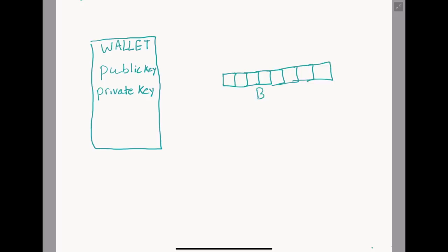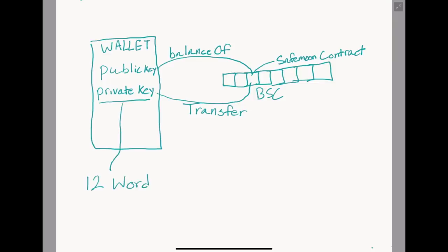All a wallet does is store your public-private key. It asks the blockchain what your balance is using your public key, and it calls the transfer function for you using your private key, so all you have to do is press a few buttons and the magic just happens. If you know your private key, whatever the 12-word seed phrase compiles into, you do not need to use a wallet interface such as Trust Wallet or MetaMask at all. You could view your balance and send your tokens from a number of different resources, whether it be on a classic terminal screen or even through BSCscan.